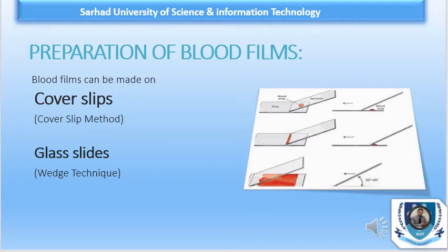Blood films can be made by two different methods. One is called the cover slip method and the other is the glass slide method. The cover slip method is not very common; although it provides superior and even distribution, it is not preferred because of some disadvantages. The glass slide technique is the most common technique of blood smear preparation and is called the wedge or push technique.